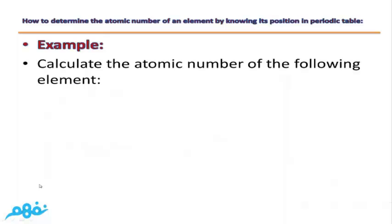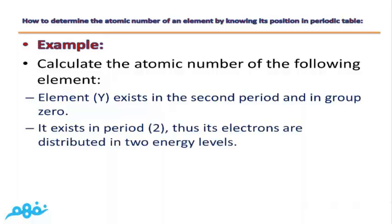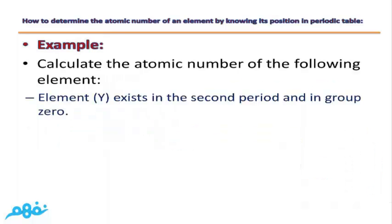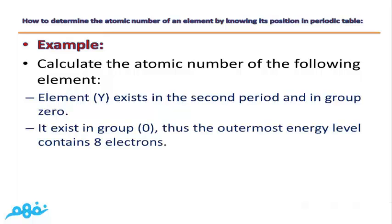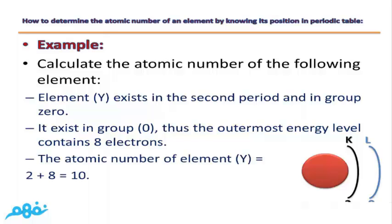Another example: unknown element Y exists in the second period and group zero. Since it is in the second period, it has two energy levels. Since it is in group zero, its outermost energy level L is completely filled with eight electrons. The atomic number of Y equals 2 + 8 = 10. This element is neon.